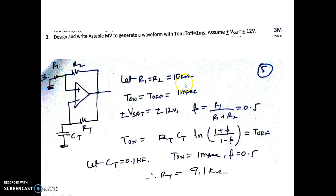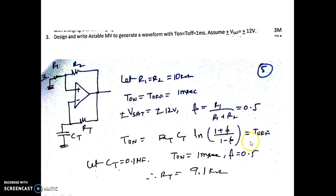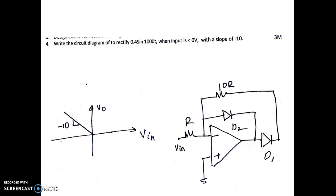Assuming R1 = R2 = 100 kΩ, with T_on = T_off = 1 ms and ±Vsat = ±12 V, beta = R1/(R1+R2) = 0.5. The on-time formula is Rt*Ct * ln(1 + 2*beta), which equals T_off. Since T_on = 1 ms and beta = 0.5, assuming Ct = 0.1 µF, the timing resistance Rt works out to 9.1 kΩ.